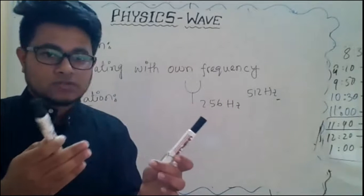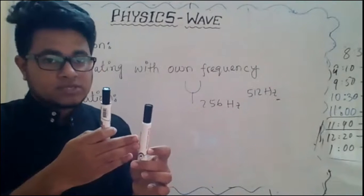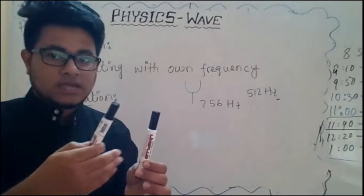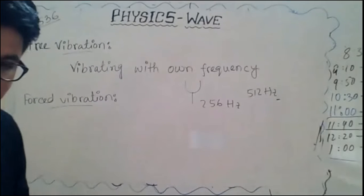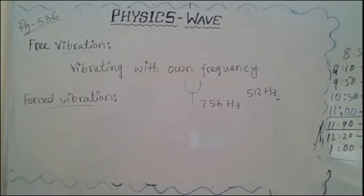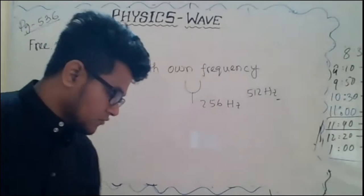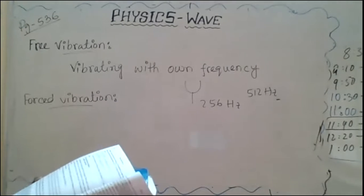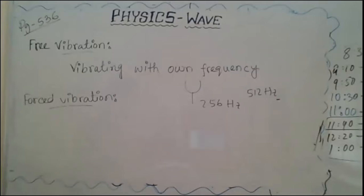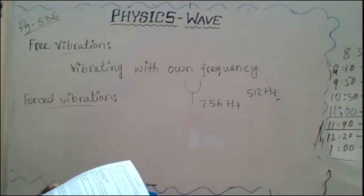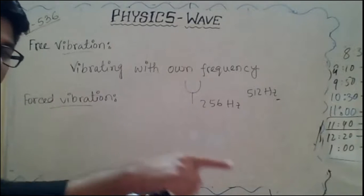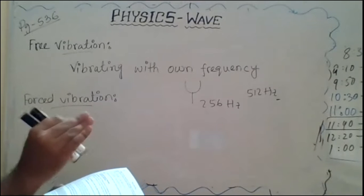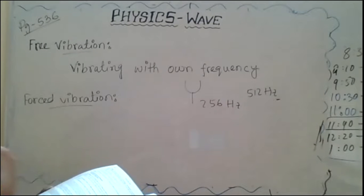This marker cannot vibrate at its own frequency now. If it were vibrating with its own frequency, that would be free vibration. But now I am making it vibrate under this periodic force — the vibration of the first marker. So I am forcing it, I am imposing this vibration on it. As a result, it is forced vibration. The body first tries to oscillate with its natural frequency, but slowly it is observed that the body oscillates with the frequency of the periodic force applied to it.